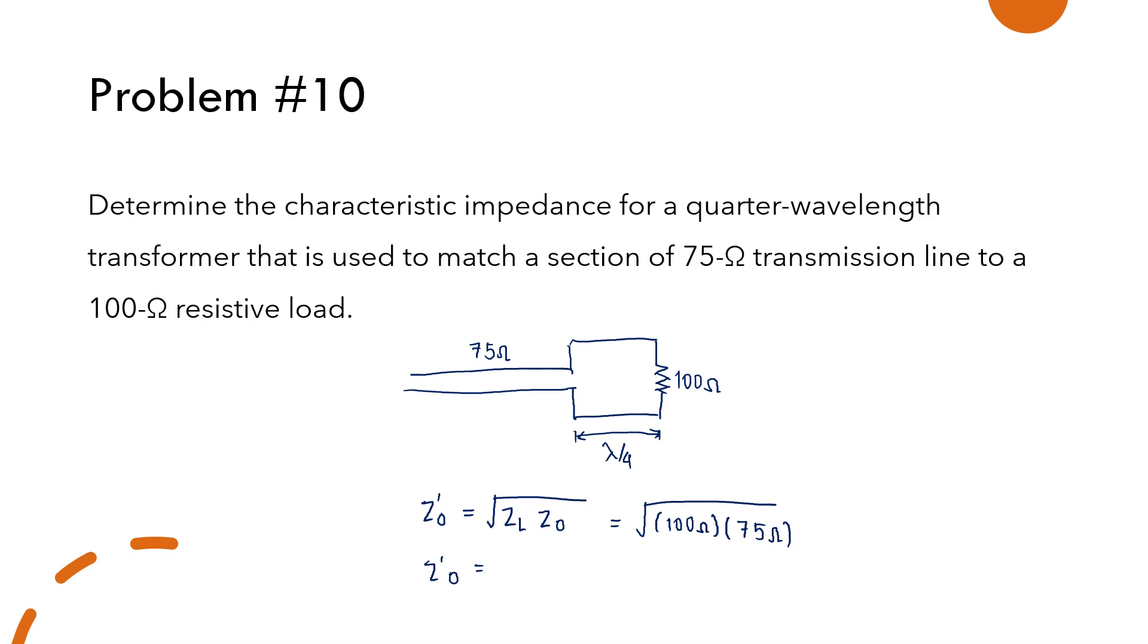And so the characteristic impedance of the quarter-wavelength transformer is equal to 50 square root of 3, or it is equal to, in decimal, 86.6 ohms.